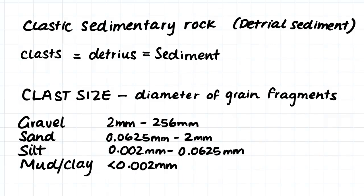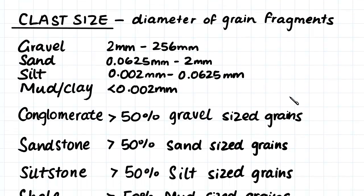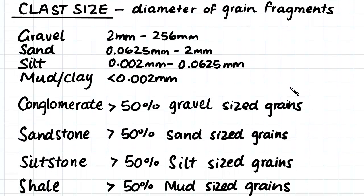So firstly in this video, we're looking at clastic sedimentary rock, which is made up of detrital sediment. The words are quite interchangeable — the words clast, detritus, or sediment all refer to the grains of rock which make up our sedimentary rock. But first of all, we're concerned with the sizes of the clasts that make up our sedimentary rock.